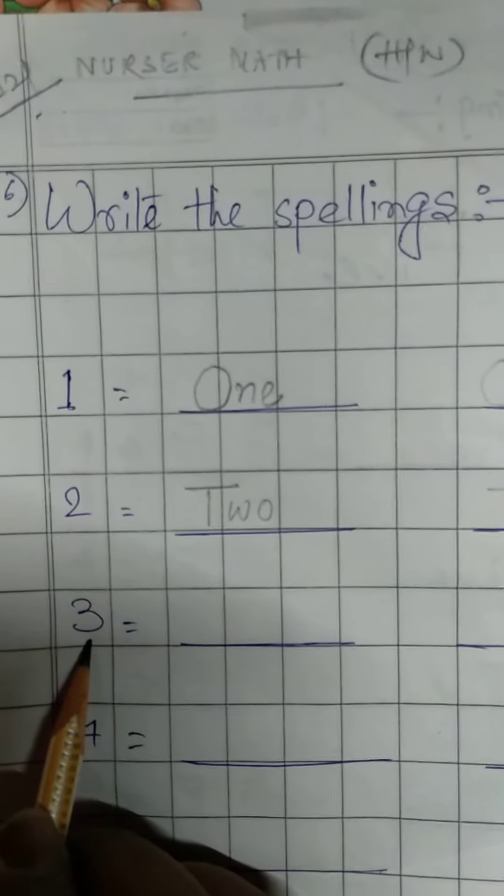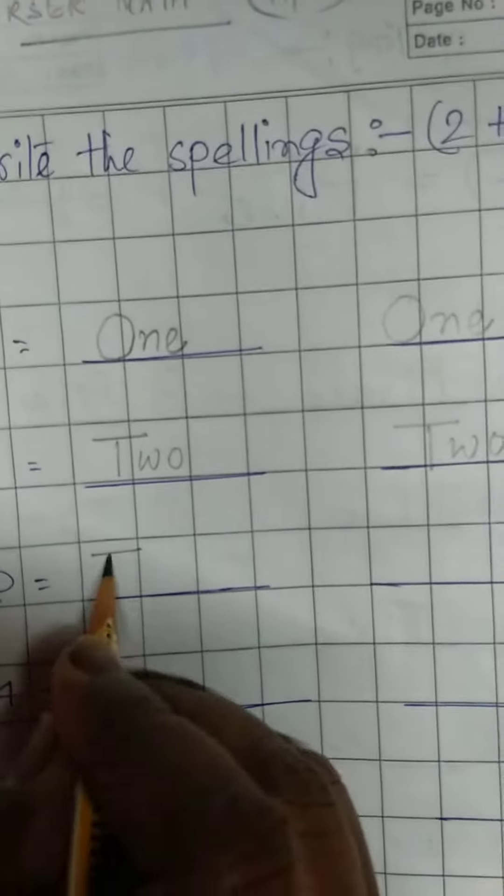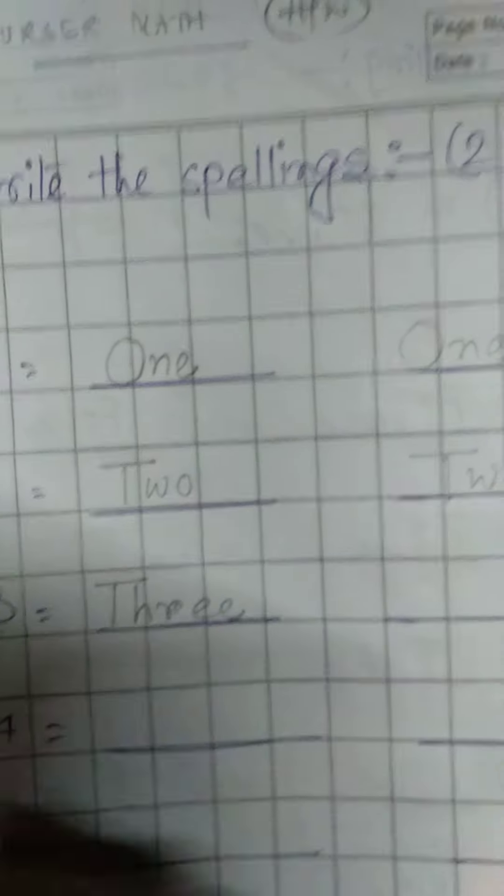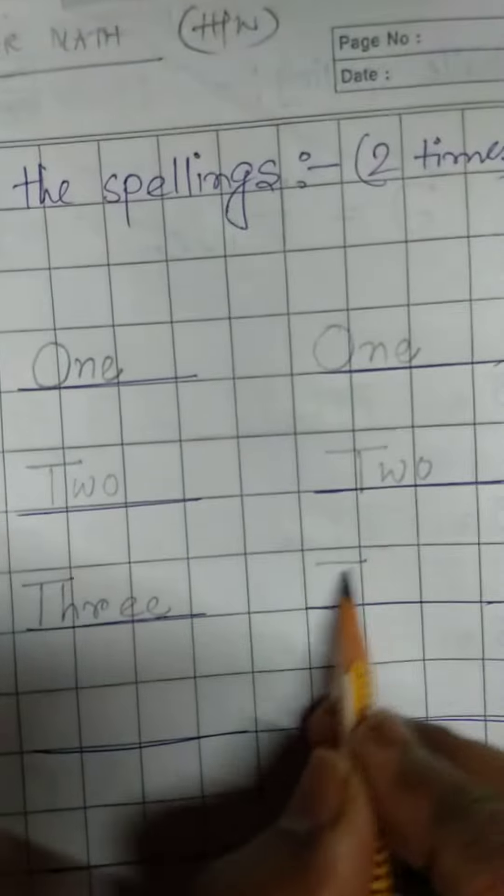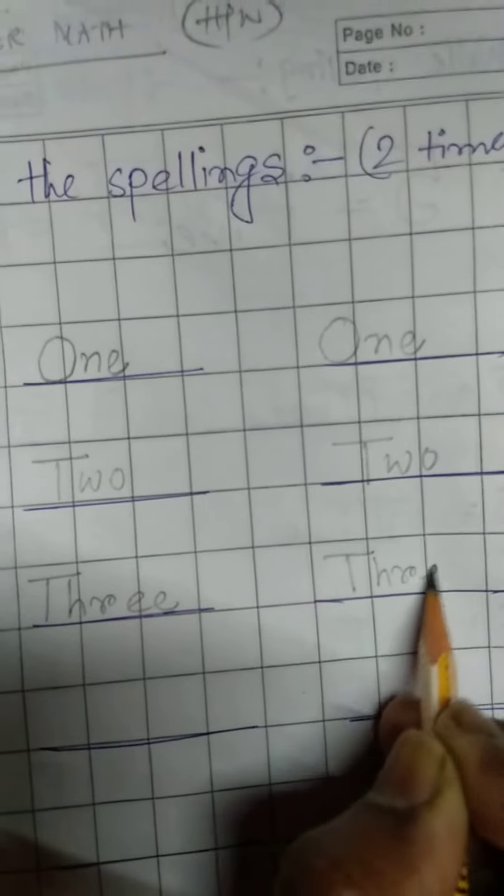Now this is number 3 and you have to write the spelling of 3. T-H-R-E-E. What is the spelling of 3? T-H-R-E-E.